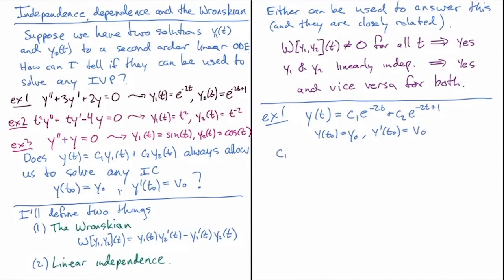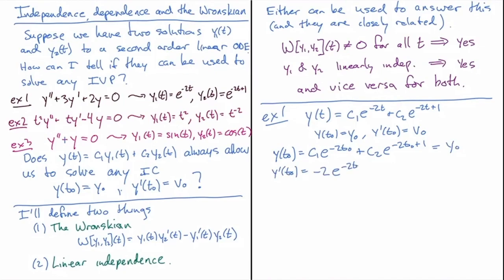Let's just plug it in and see. We get y(t₀): c1·e^(−2t₀) + c2·e^(−2t₀+1) = y₀. And y'(t₀): −2c1·e^(−2t₀) − 2c2·e^(−2t₀+1) = v₀. We have to solve this system of two equations for c1 and c2. The question is: can we always find c1 and c2 for any y₀ and v₀? If yes, we have a general solution; if no, we need to find another solution.